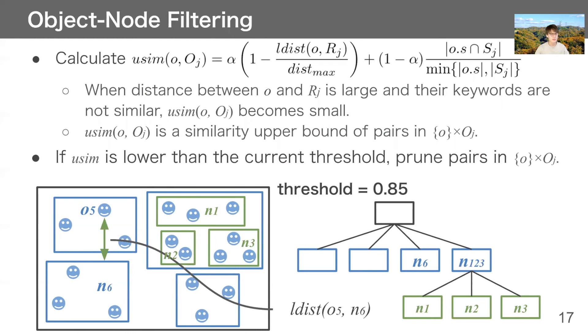If we cannot prune with node-node filtering, we can use object-node filtering. First, given object O and node NJ, we calculate usim. As you can see, when distance between O and RJ is large and their keywords are not similar, usim becomes small. And we know that usim is a similarity upper bound of pairs in O times OJ. Therefore, if usim is lower than the current threshold, we can prune pairs in product of O and OJ.